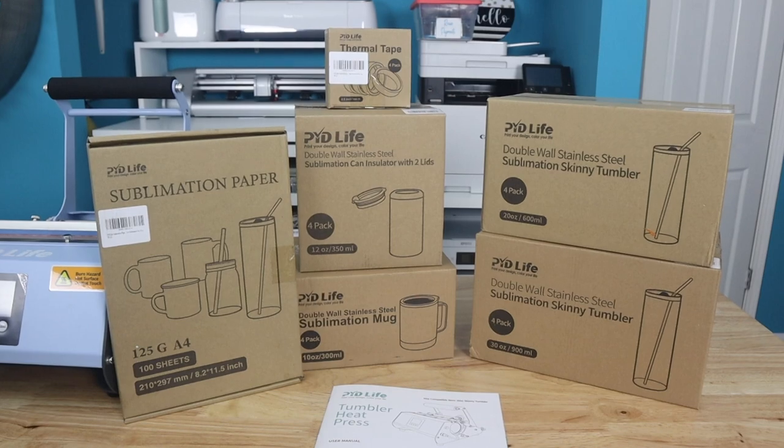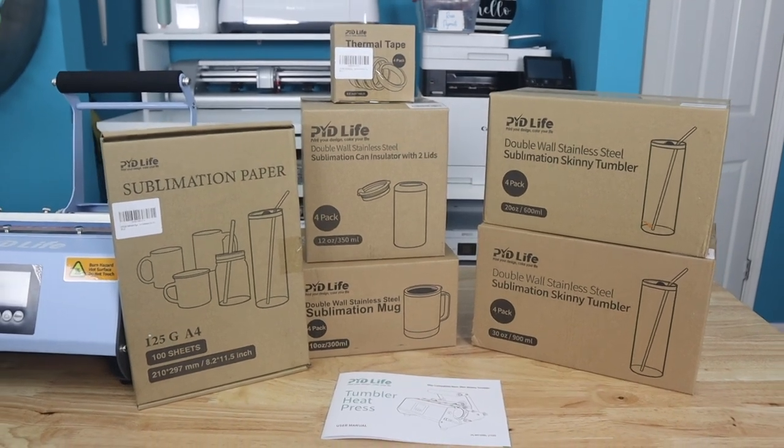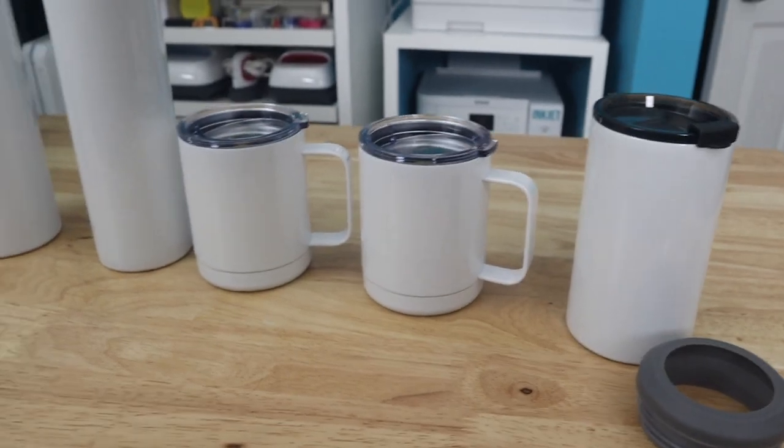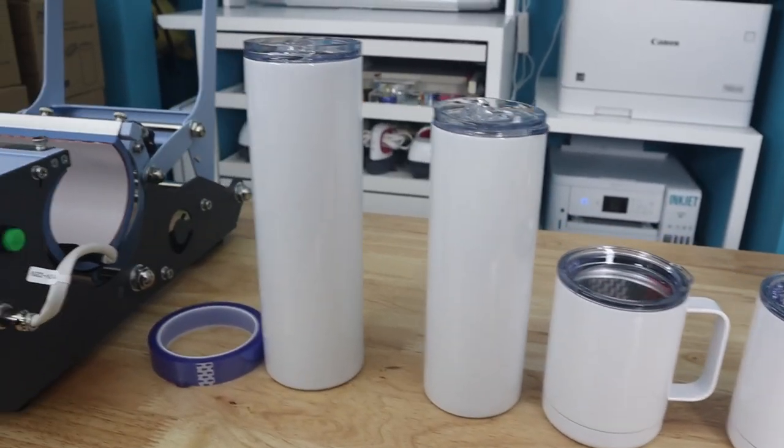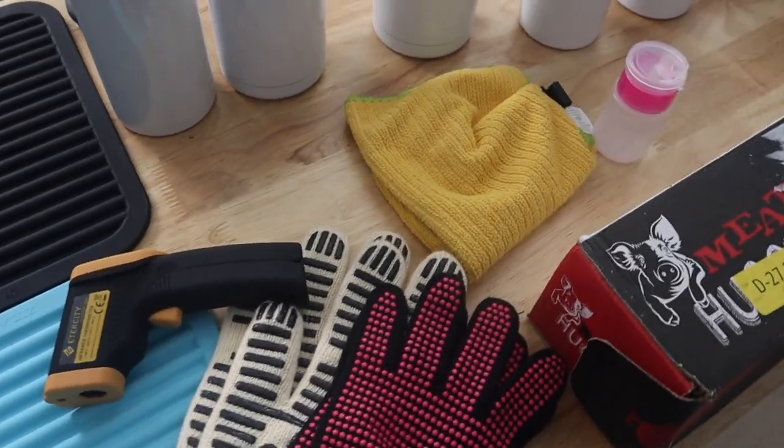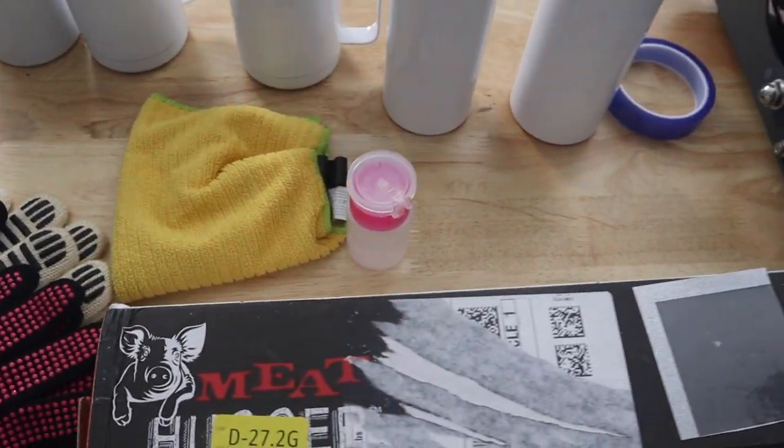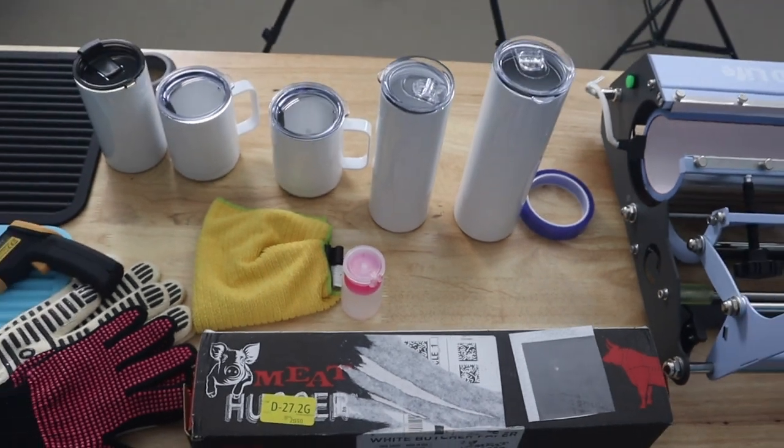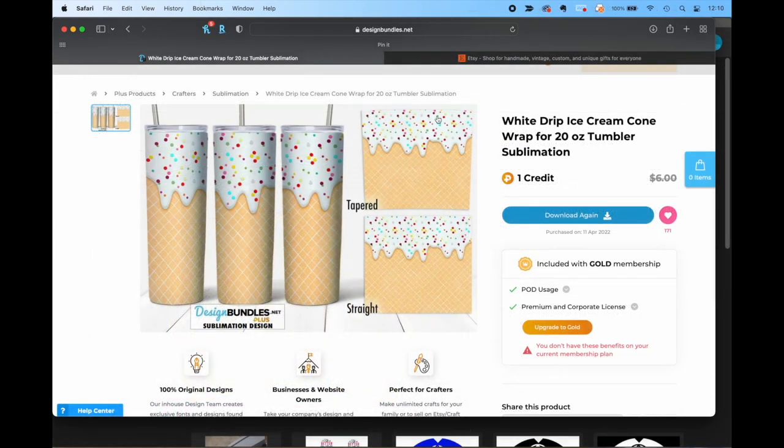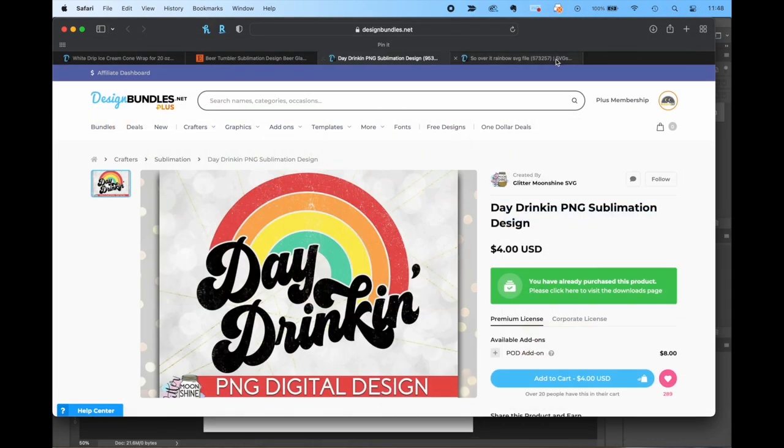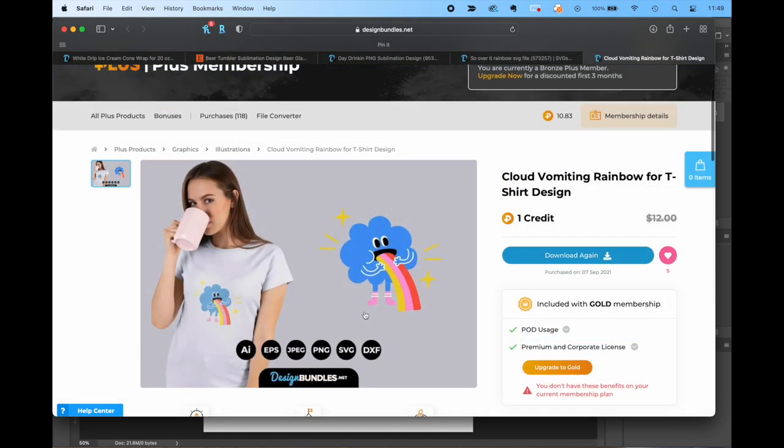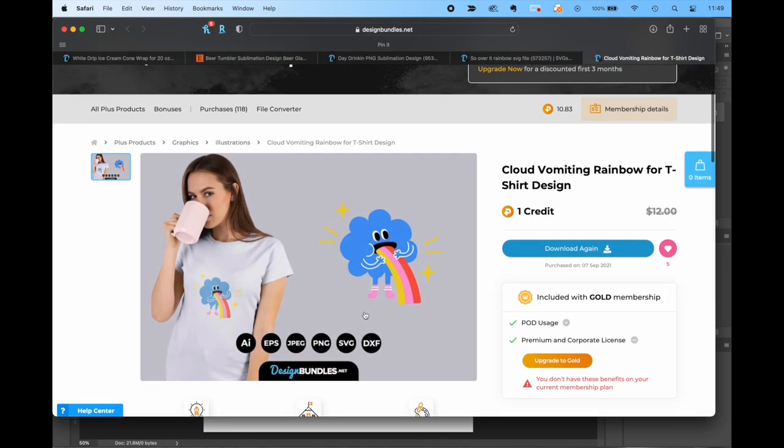Here are the other materials that PYD Life so graciously sent us. We have a variety of blanks as well as their tape and paper, and we're going to test all of those out. And here's some of the rest of the things we need to do sublimation: mats, butcher paper, gloves, and cleaning materials. Everything will be linked below, including the graphics that we're going to use, that beer one from Etsy, the ice cream one from Design Bundles, as well as a few other cute ones from Mugs, also from Design Bundles. This last one we added some text to, and now we're going to take you inside Photoshop.